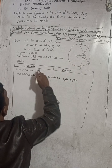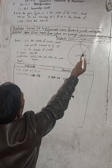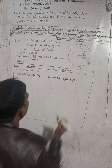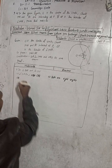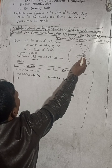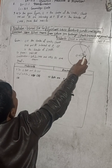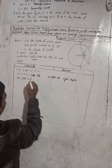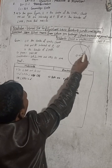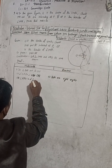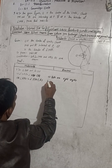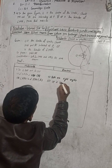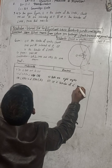Both are right angles because we have drawn OB perpendicular to RS and OA perpendicular to MN. Angle APO is equal to angle BPO. The reason is that OP is the bisector of angle MPR.